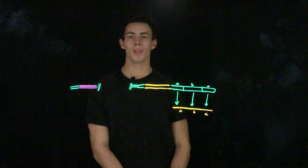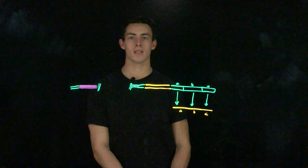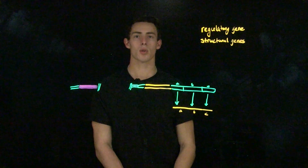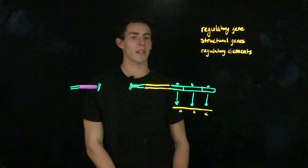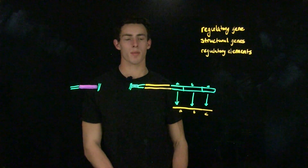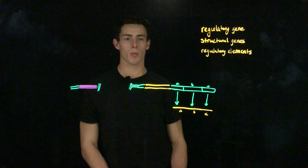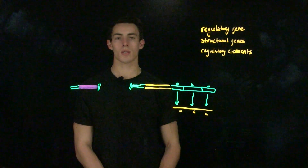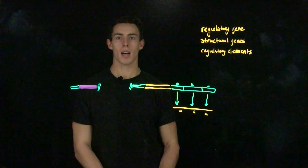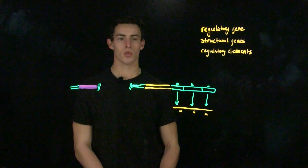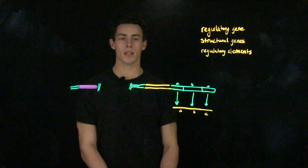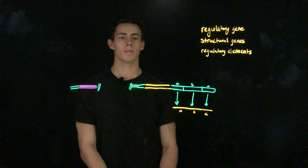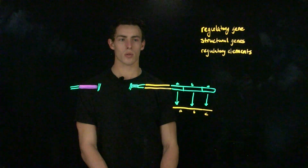Now let's look at the structure of an operon. Within an operon, we have three different things: we have a regulatory gene, we have structural genes, and we have regulatory elements. A regulatory gene is a gene that is generally upstream from the operon and is going to produce a regulatory protein that binds to the operator, which will either increase or decrease the transcription of a given set of structural genes. A structural gene is a gene that encodes for proteins or enzymes of a metabolic pathway in a prokaryotic cell.